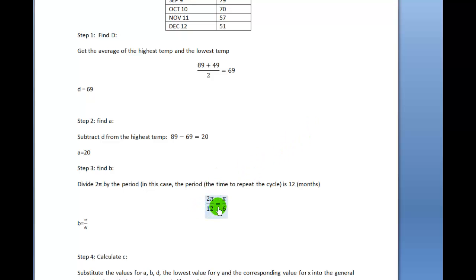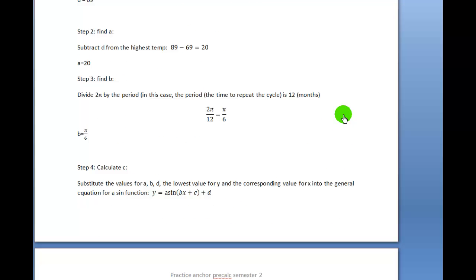Now step 4, which you might consider to be a tough one - step 4 is the tough step, and that's to calculate C. We're going to substitute in values for a, B, and D that we found, and we're going to use the lowest value for y and the corresponding value for x.